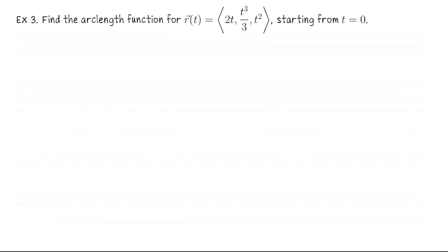Just as before, the first thing we need to do is compute the velocity vector and the speed. So I'll do that pretty quickly, so we're going to have r prime of t is 2t squared 2t. That's just term by term differentiation.